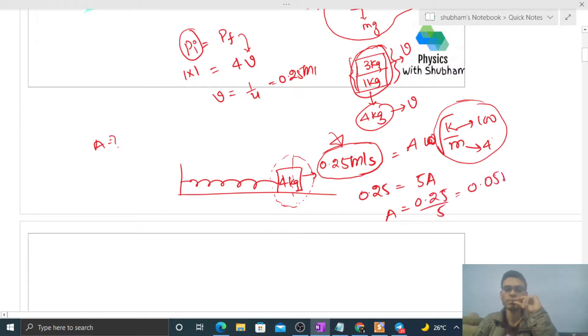And what was asked? Frequency was asked. So frequency is 1 upon 2 pi under root of k by m. Just put the values. k value will be 100 and mass will be 4 kilogram.